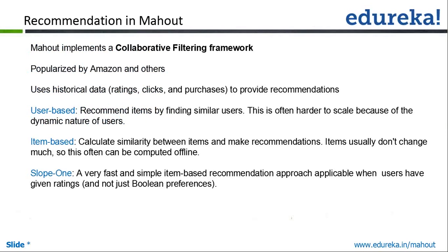Today we will cover the basic algorithms in Mahout. Mahout implements a collaborative filtering framework popularized by Amazon and others. Amazon, YouTube, and others also use recommendations — YouTube in particular uses item-based recommendations. Mahout uses historical data like ratings, clicks, and purchases. User-based filtering finds similar users but is harder to scale due to the dynamic nature of users. Item-based filtering calculates similarity between items, and since items don't change much, this can often be computed offline, making it more reliable.